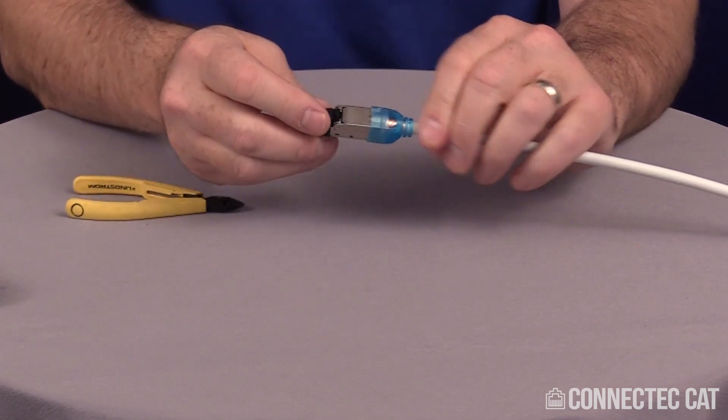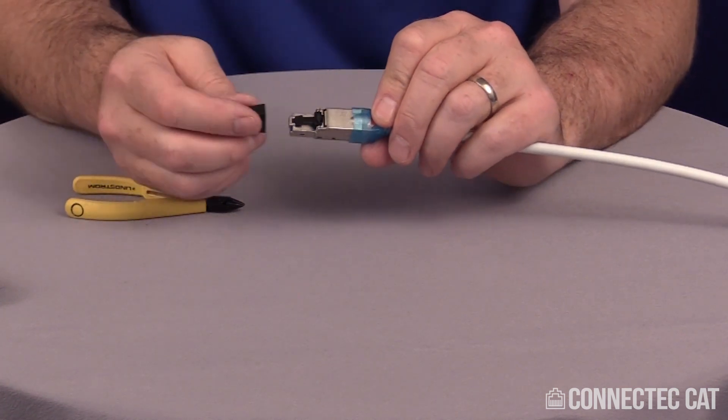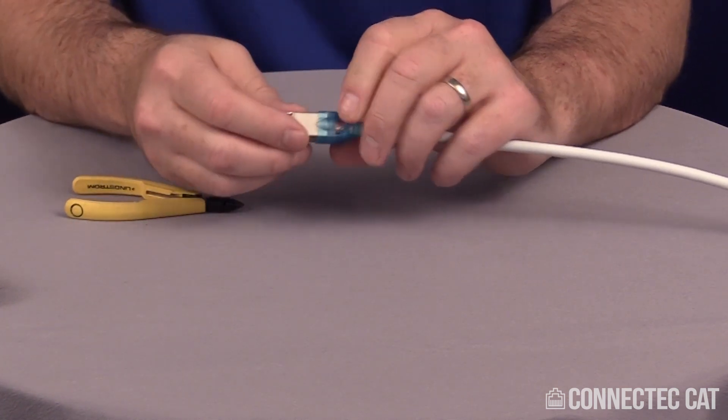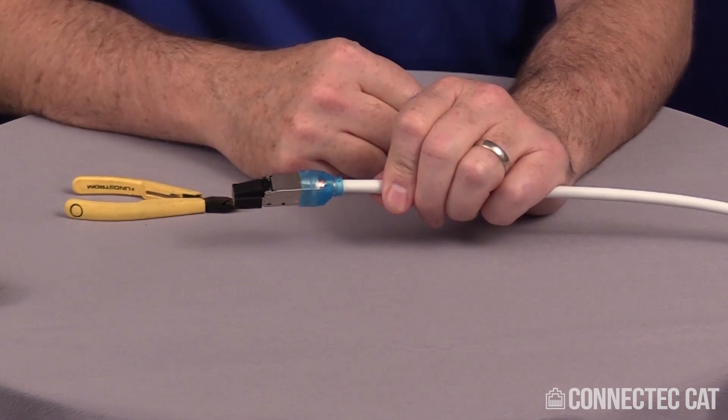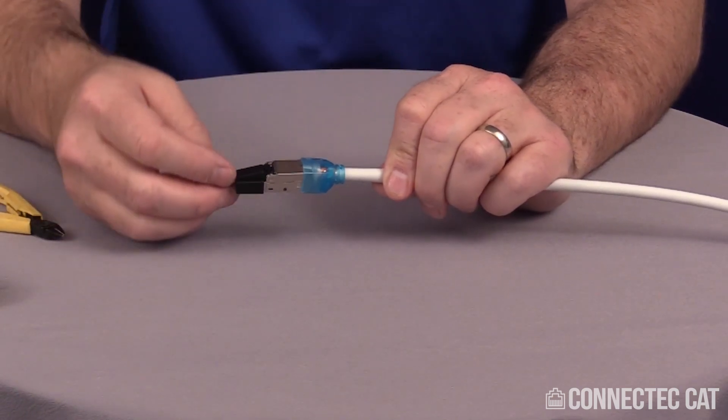This cap on the front is just to protect your RJ45. You can take it off before you terminate it. This connector is re-terminable. You can actually take it back apart and re-terminate it. If you kept the label, you'd be able to know the color code, but that's very easy to do as far as re-termination.